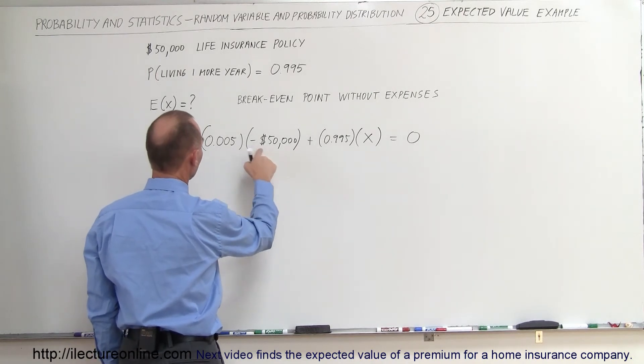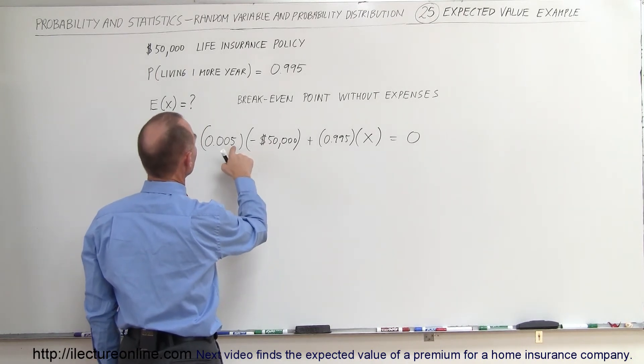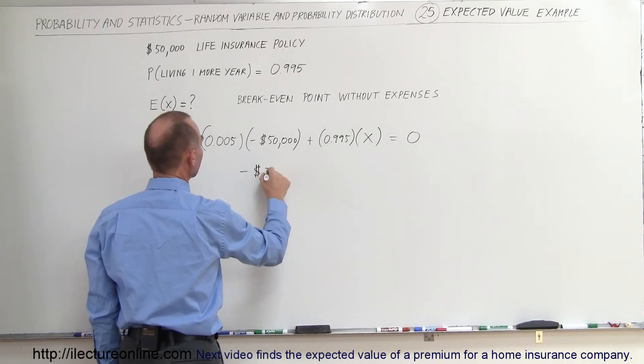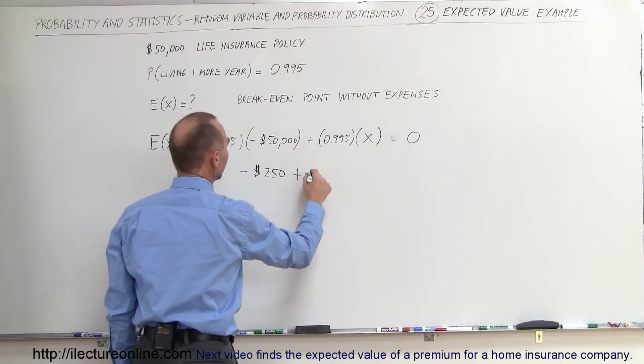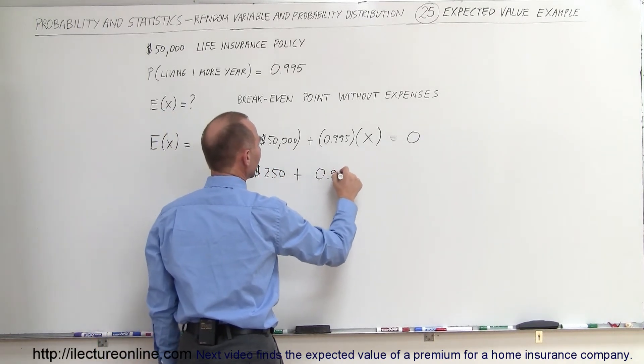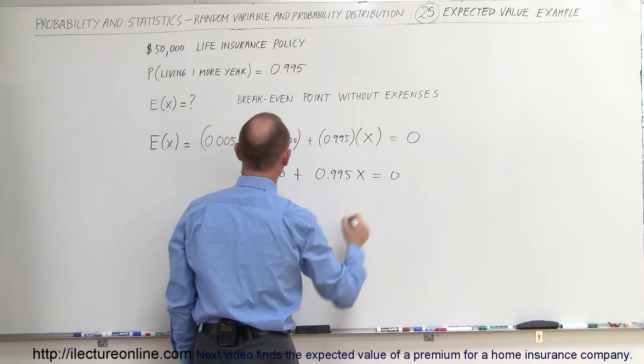So 0.005 times $50,000, that would be 250, minus 250, plus 0.995x equals 0.